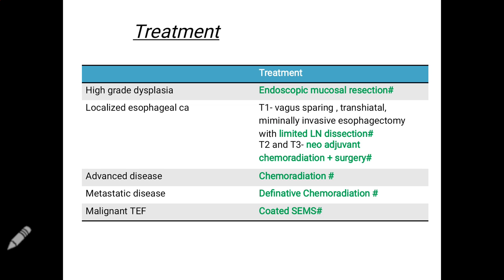The McKeown esophagectomy is a three-stage approach: laparotomy, then thoracotomy, then a neck incision, with complete esophagectomy and placement of a gastric tube. The transhiatal esophagectomy is a two-step procedure involving laparotomy and a neck incision with no thoracotomy, resulting in fewer complications. However, there are more chances of anastomotic leak and bleeding, though overall still less than with Ivor Lewis.